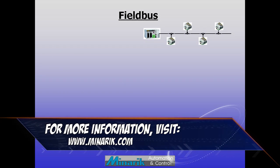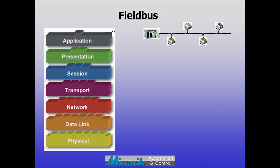Underlying all networks is a structure represented using a standardized model, known as the Open Systems Interconnect or OSI model. It describes the fundamental building blocks of networking in seven layers: physical, data link, network, transport, session, presentation, and application.